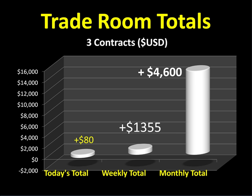Let's talk about our trade room totals today. We took eighty dollars out of the market. We were up at one point about five hundred, we were down by almost two hundred, and we ended up settling just below a hundred bucks. That brings our weekly total to thirteen fifty-five and our monthly total for July to forty-six hundred — all on a three-contract account, in U.S. dollars.